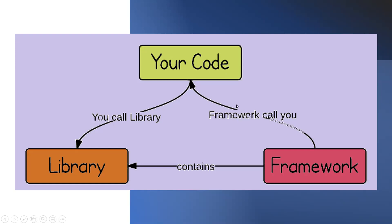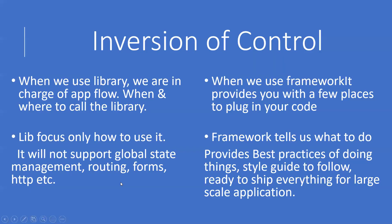Whereas with a framework, the framework will tell what to do. It provides some places where we can plug in our code, and it will call our code accordingly. So the framework has control and tells exactly what to do with our code. A framework can also consist of many libraries as well.